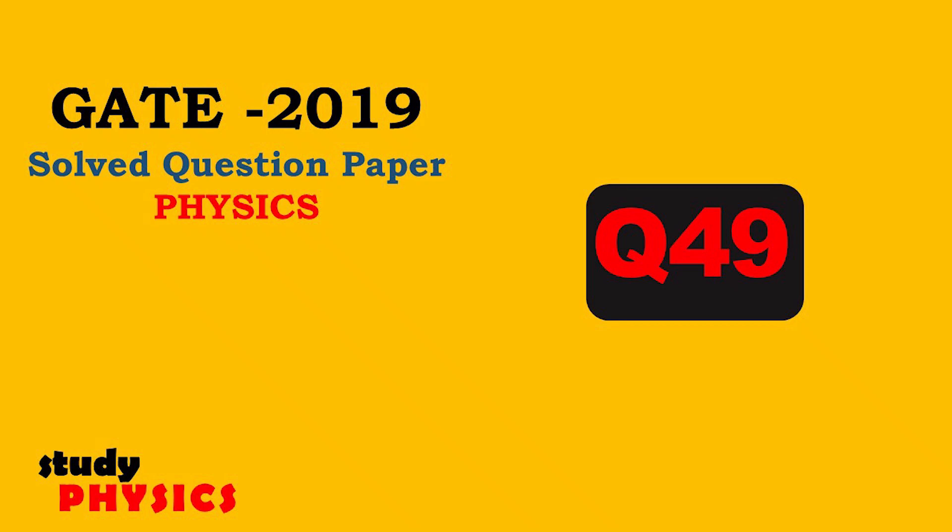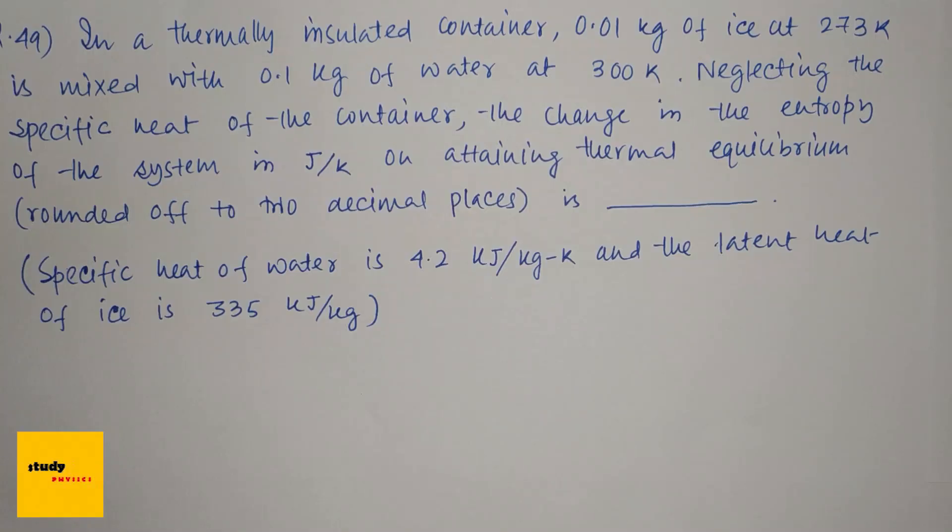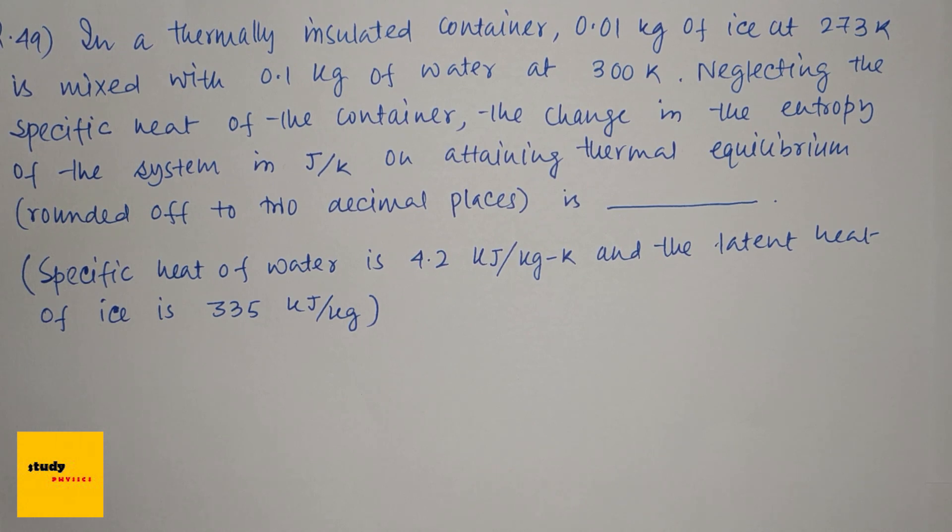Hi everyone, welcome to Study Physics. Here's question number 49: In a thermally insulated container, 0.01 kg of ice at 273 Kelvin is mixed with 0.1 kg of water at 300 Kelvin. Neglecting the specific heat of the container, the change in entropy of the system in joules per Kelvin on attaining thermal equilibrium is... The specific heat of water is 4.2 kilojoules per kg Kelvin and the latent heat of ice is 335 kilojoules per kg.